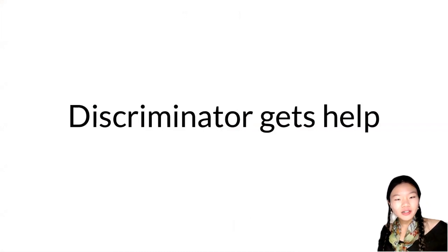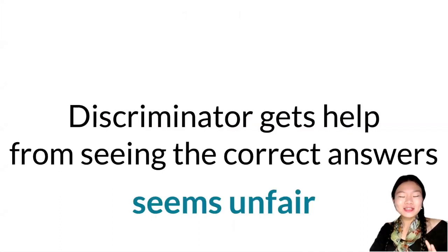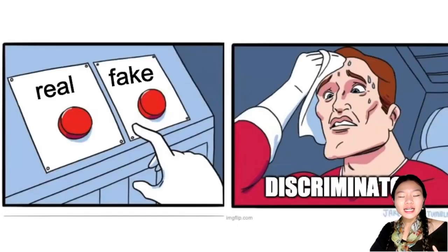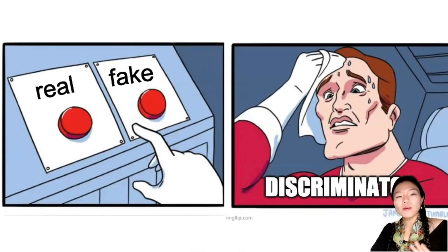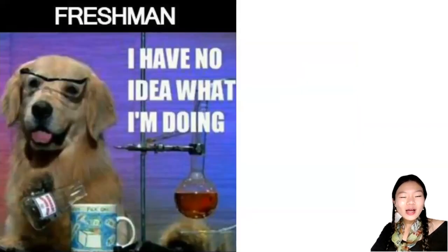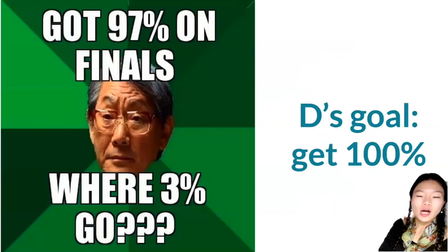The discriminator — the opponent, the adversary — also gets help, because it gets help from seeing the correct answers. At first glance this might seem unfair, because the discriminator gets to see the correct answers. It seems like cheating, but it actually has to take the test before seeing those answers. It has to decide, when it sees these random images, whether each one is real or fake before being told the answer. The discriminator is not great in the beginning — it's quite unsure what the answer is, having never seen a correct answer before. After seeing some answers it gets better, and its job is to try to get 100% on this test every single time.